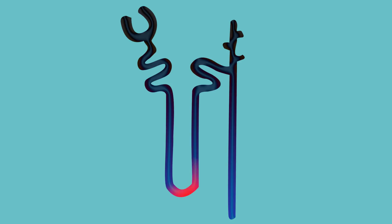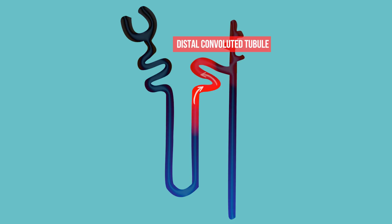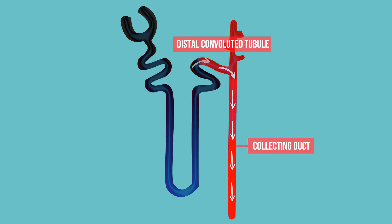The fluid now continues along the nephron, entering the distal convoluted tubule and finally the collecting duct. In these last two regions of the nephron, fine-tuning of the body fluid composition is achieved.